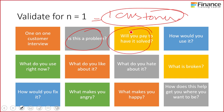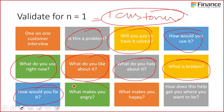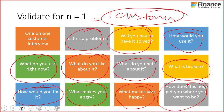Is this a problem? Will you have it? Will you pay to have it solved? How would you use it? When do you read the sci-fi book? What kind of sci-fi books do you want to read — hard science or soft science? What do you do right now to solve this problem? What do you like about what you have? What do you hate? What in the current solution is broken? How would you go about fixing it? What makes you angry when you use this product? What makes you happy? How does this help you get where you want to be?